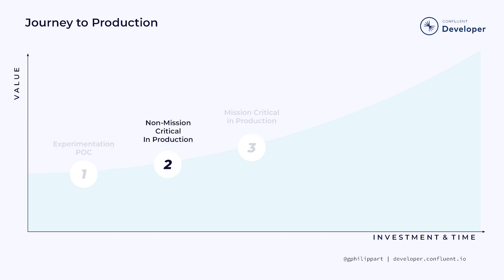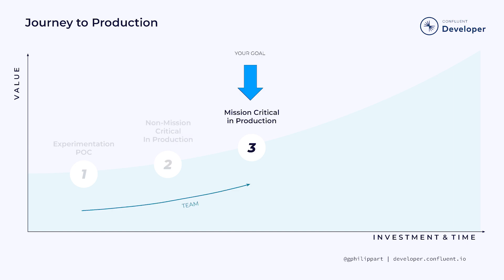Level two is usually when you develop a non-mission critical workload, maybe an analytics use case, and deliver it to production. If the platform has performance problems or the infrastructure fails, it's not a big deal because it's not a core business application. But for this course, our goal is to create an event streaming platform and deliver a mission critical event streaming application in production. That's level three.